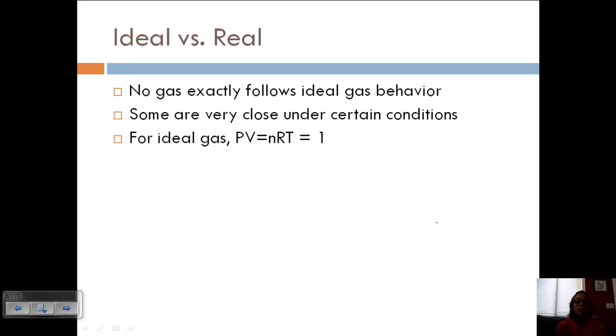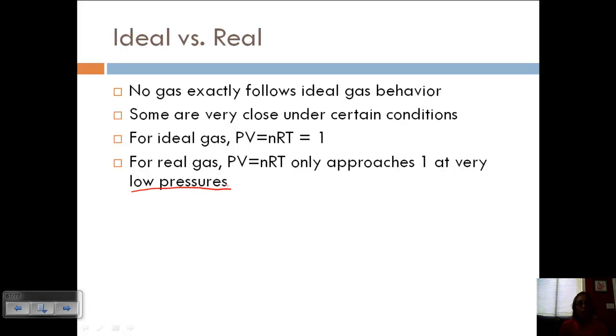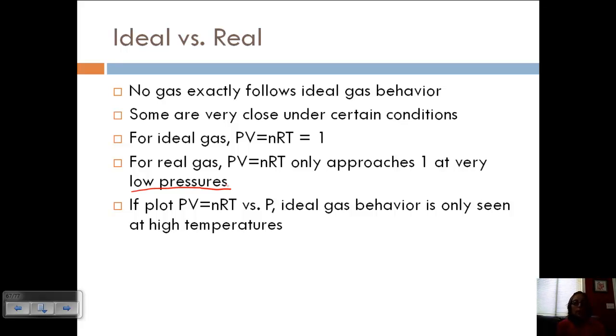For an ideal gas, PV equals NRT, which equals one. And so for real gases, PV equals NRT only approaches one at very low pressures. So remember we talked about those certain conditions. For a real gas to behave like an ideal gas, we need a low pressure. If we plotted PV equals NRT versus P, ideal gas behavior would only be seen at high temperatures. So here's our other condition. We need high temperatures and low pressures for a real gas to behave like an ideal gas. So I put this in red. This means it's important. Real gases exhibit ideal gas behavior at low pressure and high temperature. That you are going to see again, so it's important to remember.